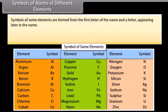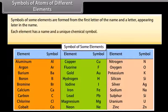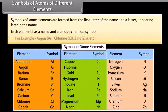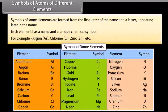Symbols of some elements are formed from the first letter of the name and the letter appearing later in the name. Each element has a name and a unique chemical symbol. For example, Argon (Ar), Chlorine (Cl), Zinc (Zn), etc.